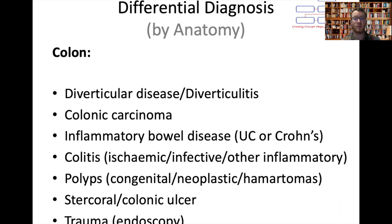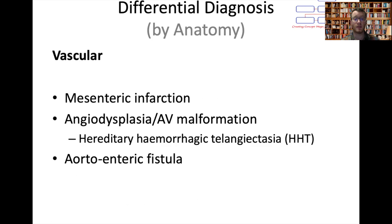With trauma, patients who've had a difficult colonoscopy might get some bruising in the lining of their bowel. Vascular conditions include any type of mesenteric infarction — in the same way that we have heart attacks and strokes, you can get infarction of the mesenteric vessels. Arteriovenous malformations can be hereditary, as well as aortoenteric fistulas — a connecting tract between the aorta and the bowel, usually due to an inflammatory bowel process causing the bowel to adhere to the vessel.